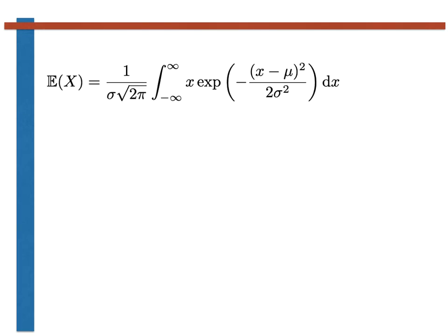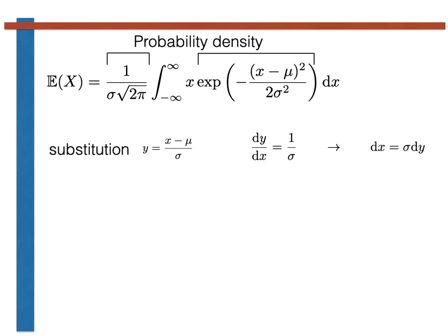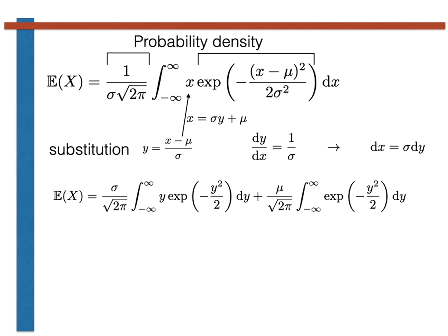Having completed the warm-up, let's move on to the main course: calculating the expectation. The expectation is equal to the integral shown here — specifically, the integral over all space of x multiplied by the probability density function. I have split the probability density function into two parts in order to take the parts that do not depend on the integration variable outside of the integral. As we did on the previous slide, we will perform this integral by substitution. We also need to replace the x in the integrand with sigma*y plus mu. Once we complete this substitution, we find that we need to compute the following sum of integrals.